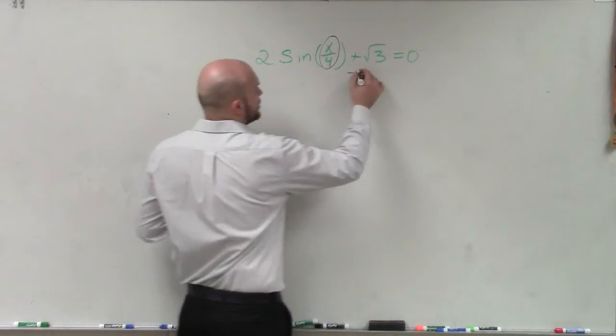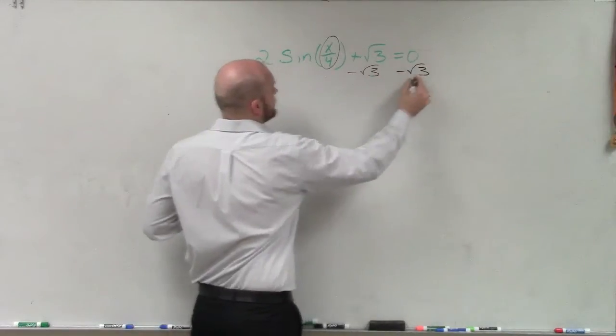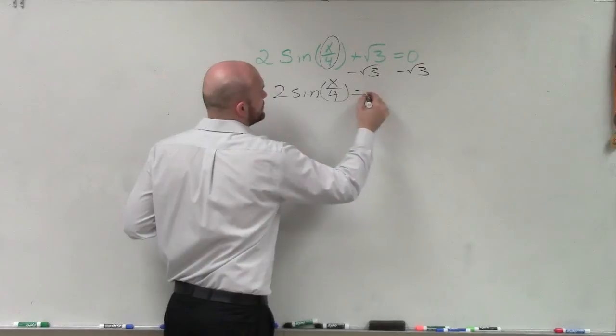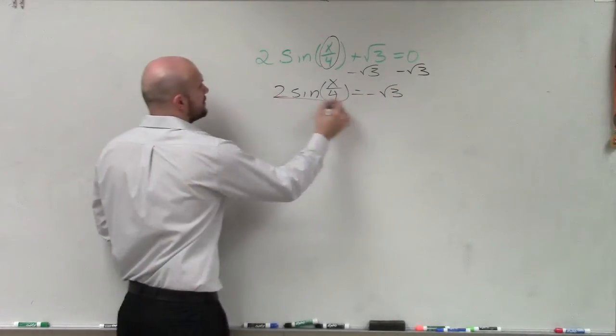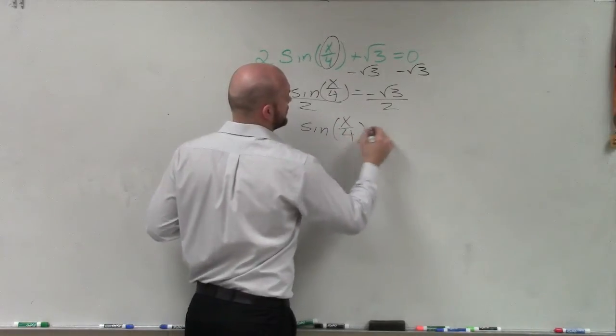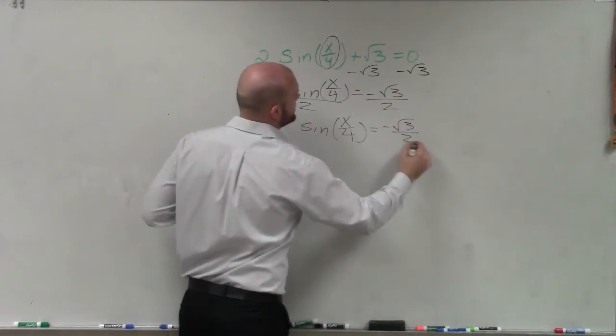So to do that, I'll subtract the square root of 3. So I have 2 sine of x divided by 4 equals negative square root of 3, divided by 2, divided by 2. Sine of x divided by 4 equals negative square root of 3 over 2.